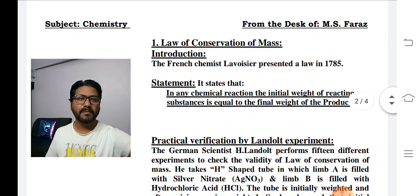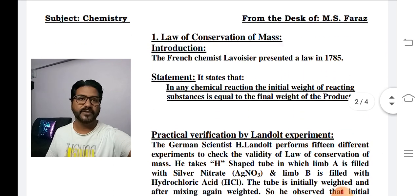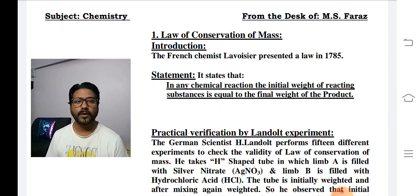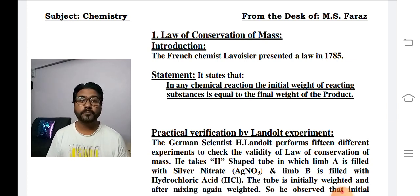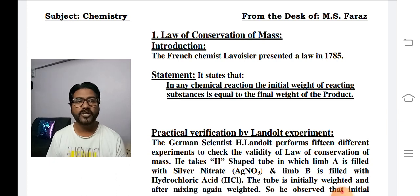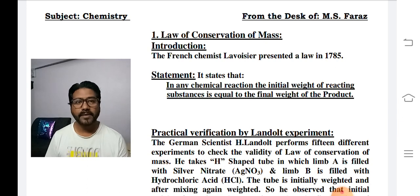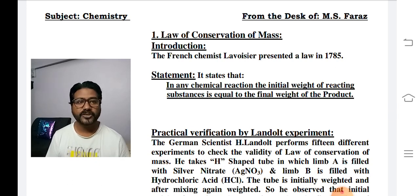سب سے پہلے ہم Law of Conservation of Mass کی طرف آتے ہیں۔ یہ فرنچ کیمسٹ Lavoisier نے 1785 میں پیش کیا۔ اس کے کہنے کے مطابق کسی بھی کیمیائی عمل میں جتنا ابتدائی وزن ڈالا جائے گا، آفٹر ری ایکشن پروڈکٹ کا اتنا ہی وزن ملے گا۔ اس کی statement یہ ہے: in any chemical reaction, the initial weight of reacting substances is equal to the weight of the final product, یعنی initial weight is equal to final weight۔